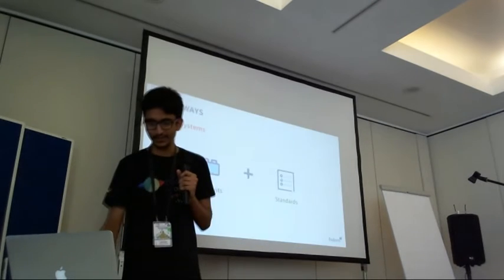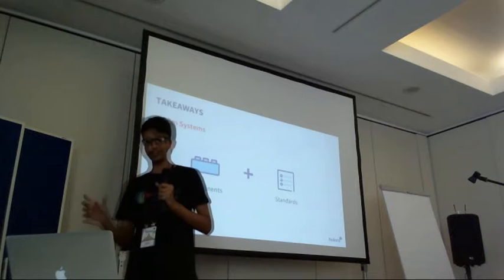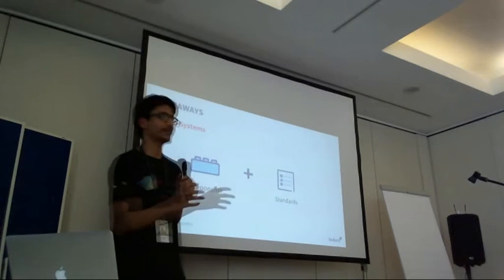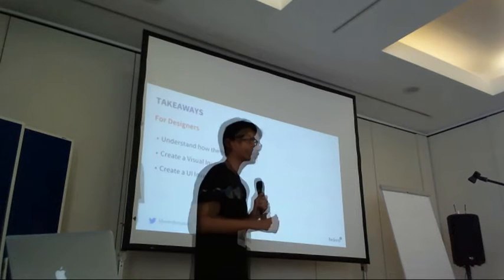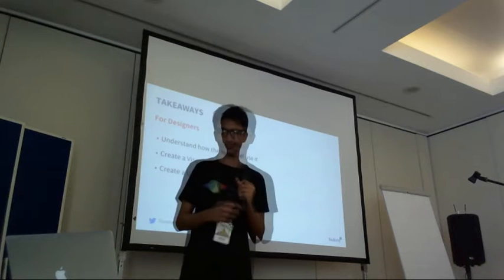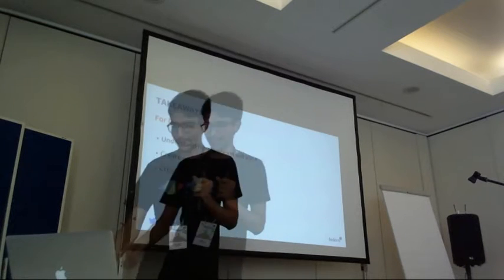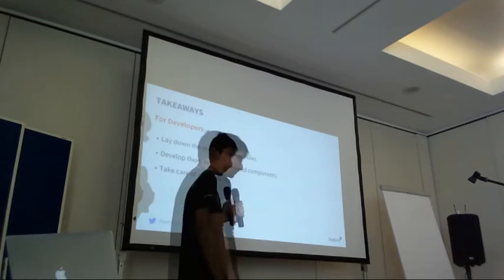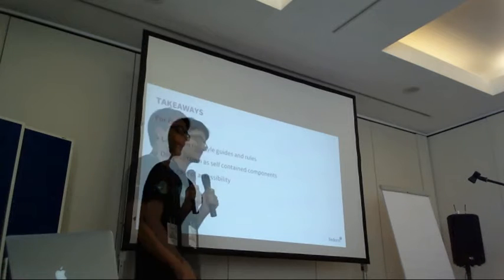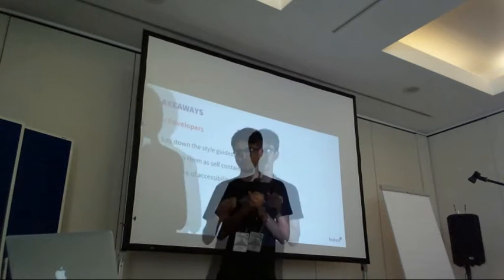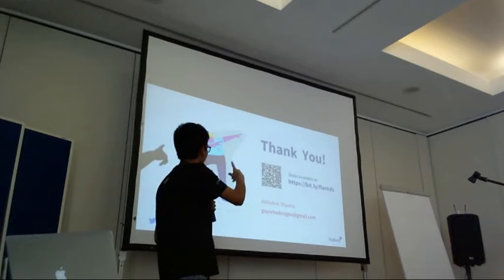The final key takeaways: a design system is made up of components and standards. Components are the UI components, and standards are the rules — what colors are being used, what are the coding standards. For designers: understand how the team will use it and what the use cases are before starting, then create a visual inventory deciding on colors, spacing, and similar attributes, then start creating the components. For developers: lay down style guides and rules for coding syntax, develop self-contained components that are not dependent on each other, and take care of accessibility. All slides are available at the provided URL or you can scan the QR code.